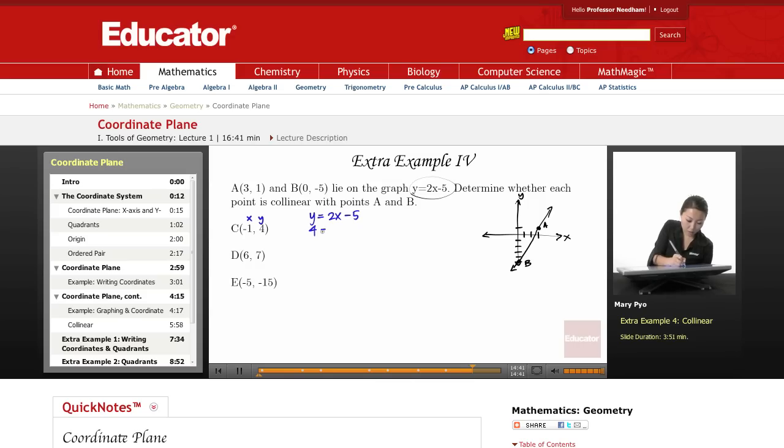So 4 equals 2 times negative 1 minus 5. So here this says 4 equals negative 2 minus 5. And then since we don't know that these are equal, does 4 equal negative 7? No, it does not.